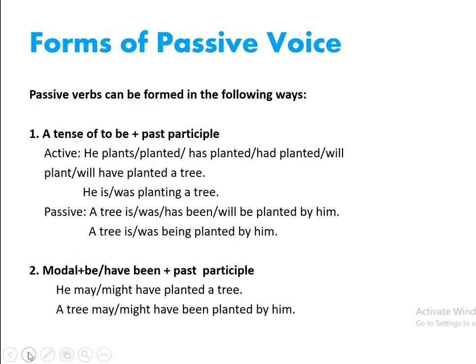Now let us try to understand the different forms of passive voice. Passive verbs can be formed in the following ways. Number one, a tense of 'to be' plus past participle. For example, the active sentence would be 'He plants / planted / has planted / had planted / will plant / will have planted a tree' or 'He is / was planting a tree.' In the passive, the sentence will be 'A tree is / was / has been / will be planted by him' or 'A tree is / was being planted by him.' The tense of 'to be' is added to the past participle to create the passive voice.